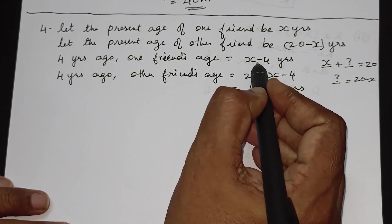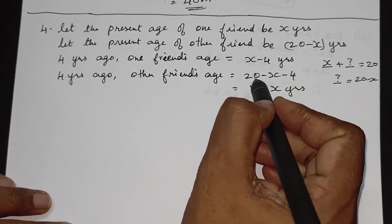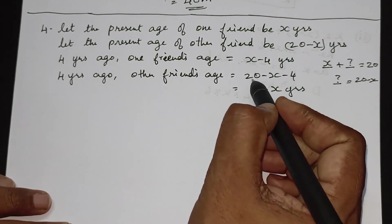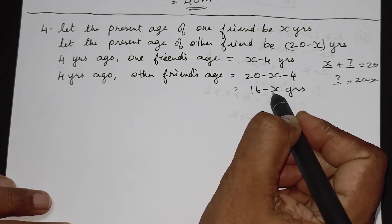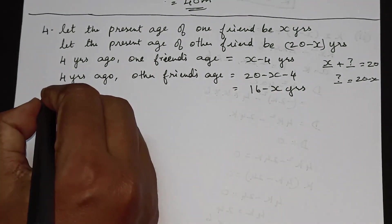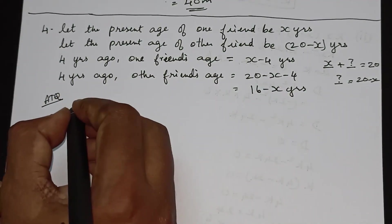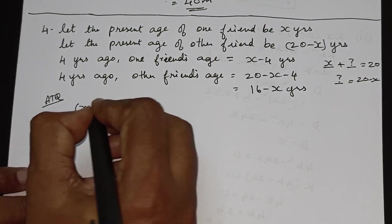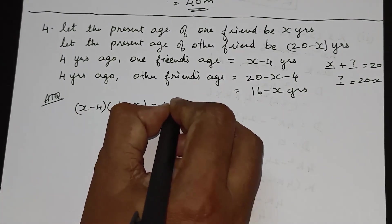Four years ago, one friend's age is x − 4. The other friend's age four years ago: 20 − x − 4 equals 16 − x. According to the question, we have to multiply to get 48. So (x − 4) into (16 − x) is equal to 48.